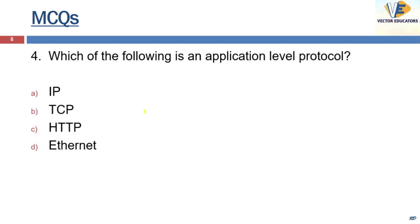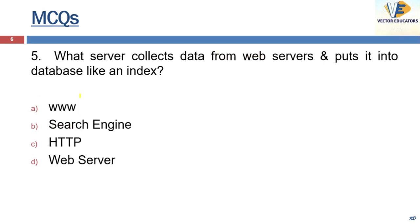Which of the following is an application-level protocol? Next: what server collects data from web servers and puts it into a database like an index? The answer is a search engine. Search engines such as Google provide links to pages that contain the object of our searches. A web crawler is a program that creates entries for the search engine index.